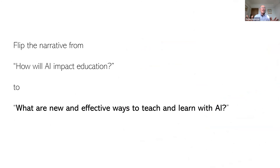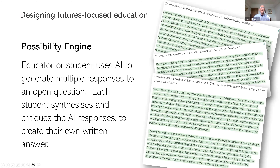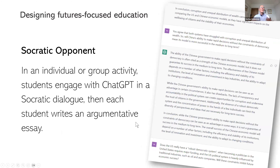For the last few minutes, I want to flip the narrative away from how AI will impact education, towards what new and effective ways to teach and learn with AI. These are example roles for generative AI. One is as a possibility engine: the educator or student uses AI to answer an open question by generating multiple responses, and then the student — individually or in groups — synthesizes and critiques the AI responses to produce their own written answer.